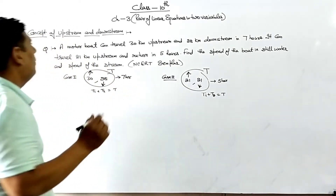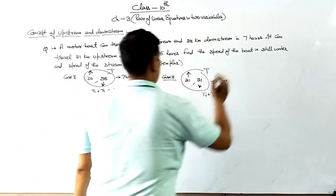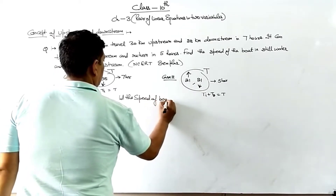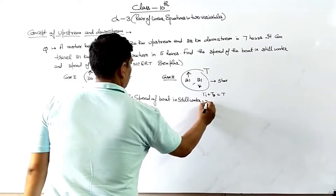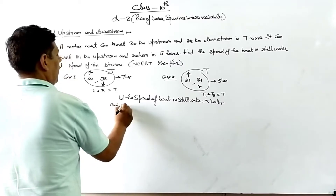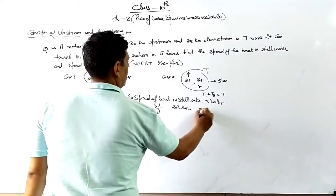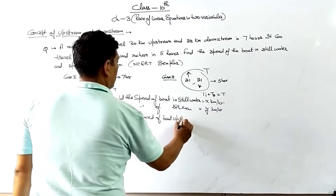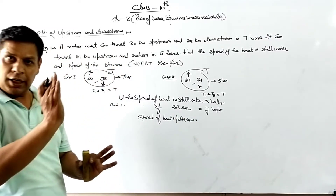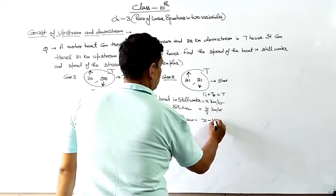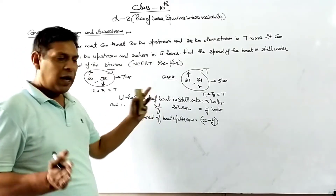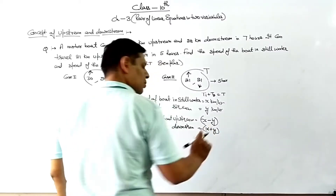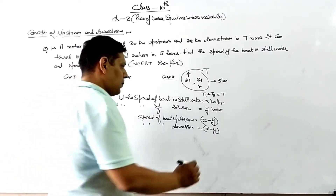Now, let the speed of the boat in still water be x km/hr, and the speed of stream be y km/hr. So the speed of the boat upstream will be x minus y, and the speed of the boat downstream will be x plus y.